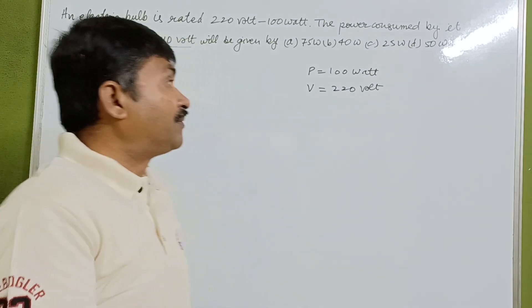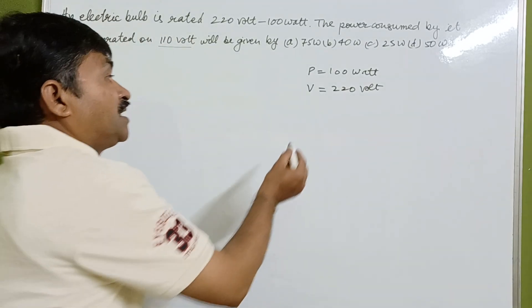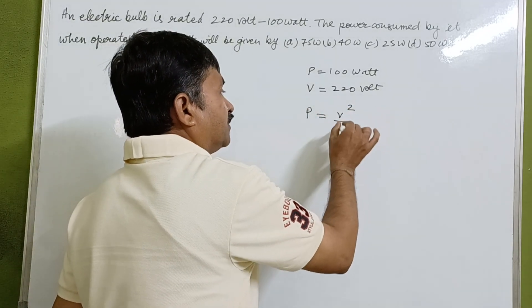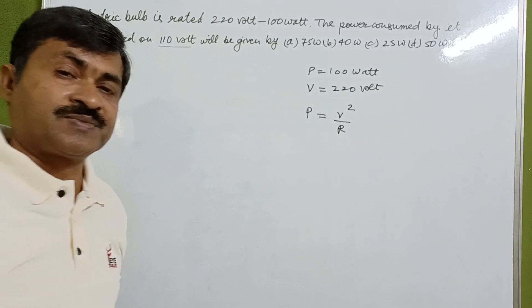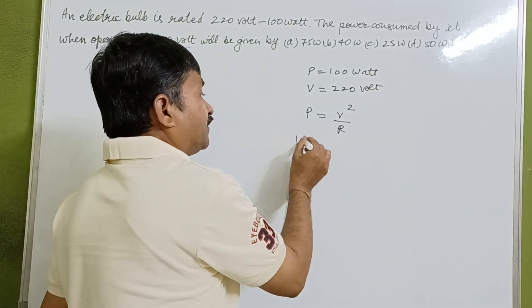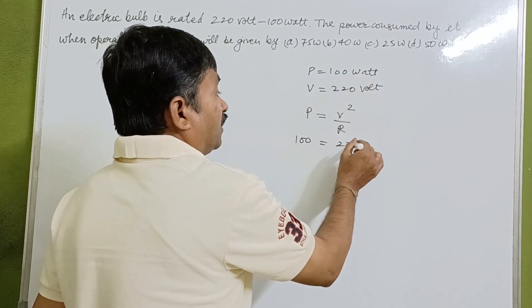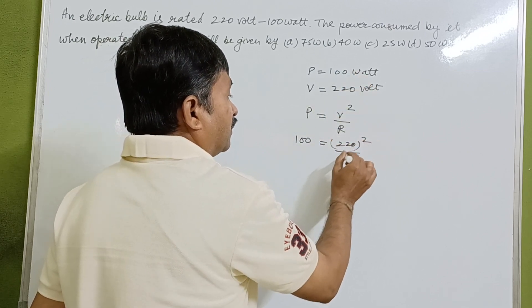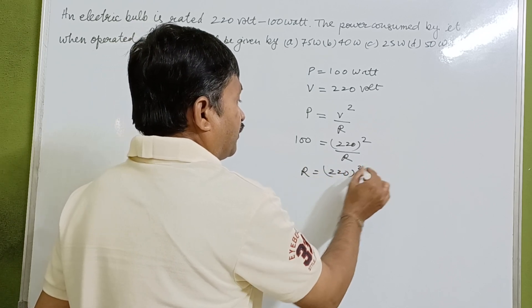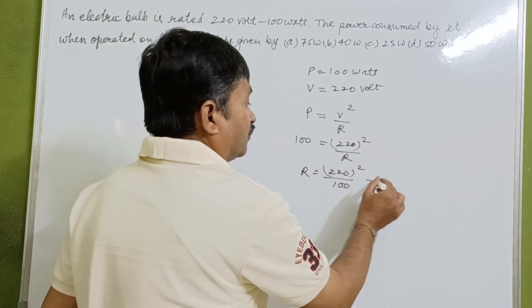We know that P equals V squared upon R. P value is 100 watt, V value is 220, so 100 equals 220 squared upon R. The resistance is 220 squared upon 100.